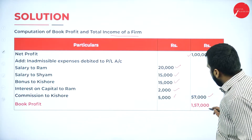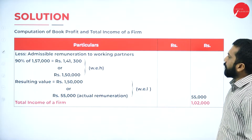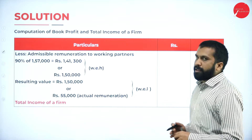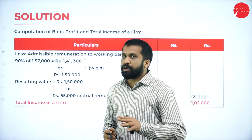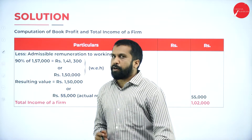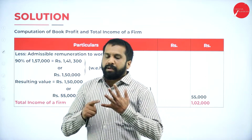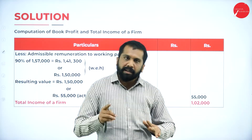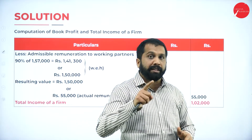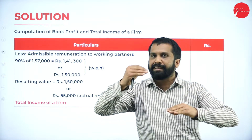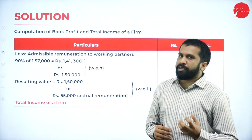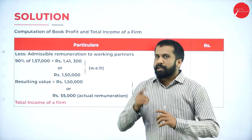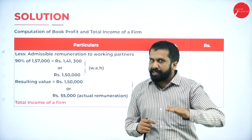We got 1,57,000. Now, less admissible remuneration. The format is: up to 3 lakh at 90%, above 3 lakh at 60%. Compare this value with 1,50,000 — whichever is higher. Whatever the higher value, compare it with the actual remuneration received; whichever is less is to be used. Admissible remuneration of working partners: book profit is 1,57,000, which is less than 3 lakh.